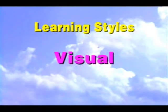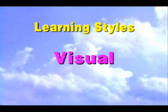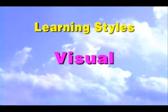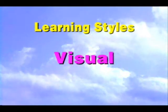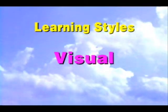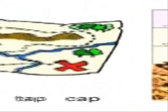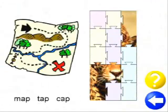Visual learners learn best by seeing information and use images and color to increase their attention. They will enjoy the variety of exercises presented to them that utilize their strong visualization skills, such as clicking on the word that matches each picture.